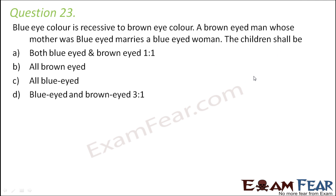Question number 23: Blue eye color is recessive to brown eye color. Brown is the dominant allele (capital B) and blue is the recessive allele (small b). A brown-eyed man whose mother was blue-eyed marries a blue-eyed woman. A blue-eyed woman has both recessive alleles, so her genotype is bb. The man is brown-eyed, so his genotype could be BB or Bb.